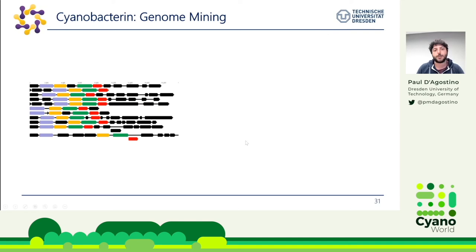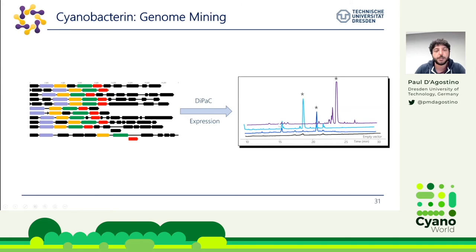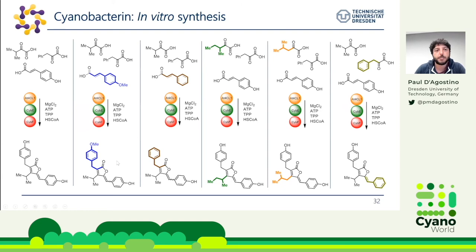Our future work is to look for more of these pathways throughout cyanobacteria to see what they might be producing. We have many pathways cloned at the moment with various structures, some already identified and others still being characterized. We are also using our in vitro system to feed different substrates and generate analog molecules — feeding different cinnamic acids or different alpha-keto acids such as phenylpyruvate, which get incorporated with small structural changes. These are all molecules we've already generated using this system.